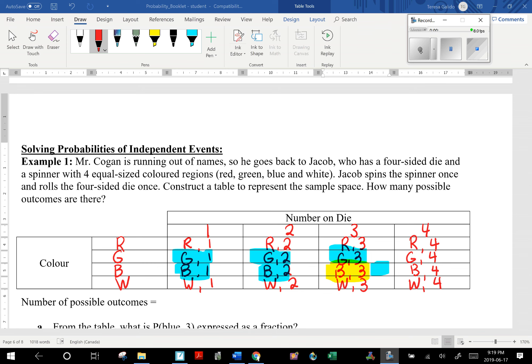So the results are, for this one here for example, you get a red and a 1 on the die. So we can see that the sample space consists of 16 possible outcomes.